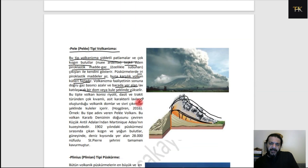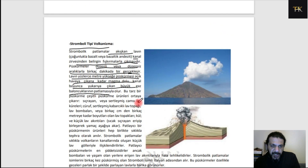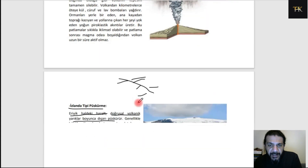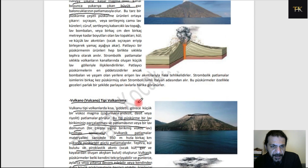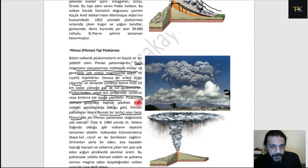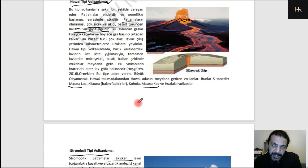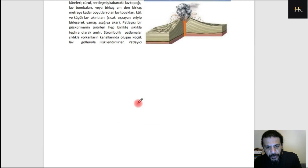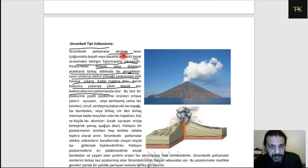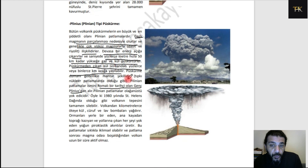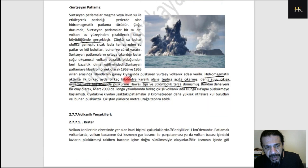Bu volkan tiplerini daha önce bahsetmiştik; ince nüanslarla birbirinden ayrıldıklarına dikkat edin. Vezüv tipi de var: aslında Stromboli artı Plinyos yaparsanız Vezüv tipi oluyor. Vezüv'de çok ciddi kül çıkışı da oluyor ve lav çıkışı da olmuş; Stromboli'nin lav çıkışı özelliği artı Plinyos'un muazzam kül bulutu özelliği bir arada.